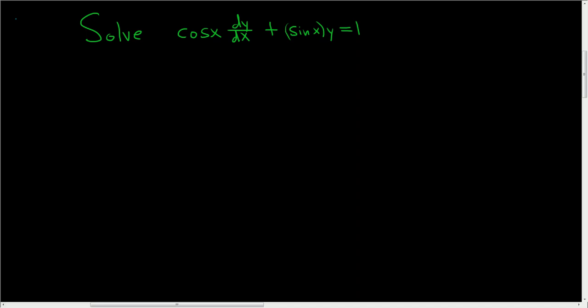So we have a differential equation, and it appears to be linear, so let's go ahead and solve it. The first step is to write this in standard form. So we want it to look like dy/dx plus p(x) times y equals f(x). That's the form that we want this to be written in.